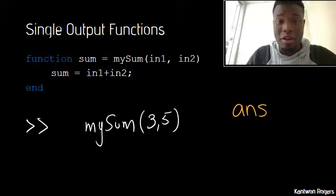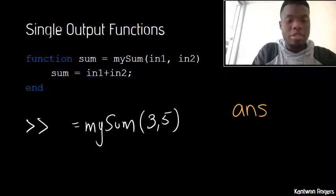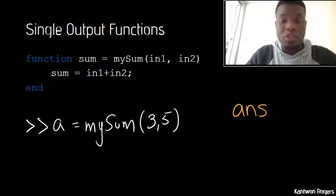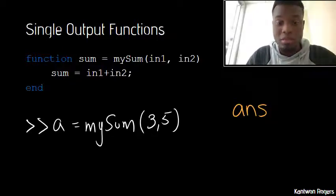You don't want to rely on this default variable so it's always good practice to assign your functions to some sort of output. So let's say I wanted to assign the output of this function to some variable that I call a. So then now I'll be calling that function mySum with inputs three and five and then I'll get the sum back as eight.